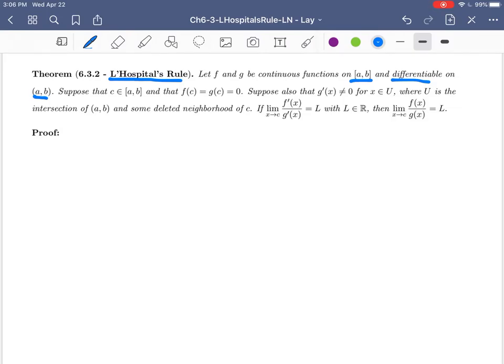If we have a place in that interval a to b where f(c) and g(c) are both equal to 0, suppose also that the derivative of g is not 0 for some value of x in this set U, where U is the intersection of the open interval (a,b) and some deleted neighborhood of c.